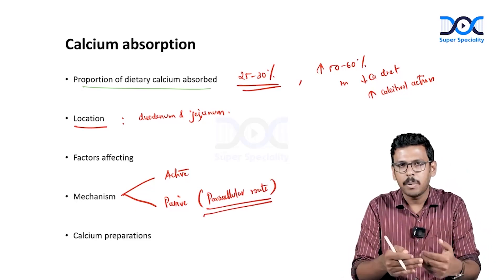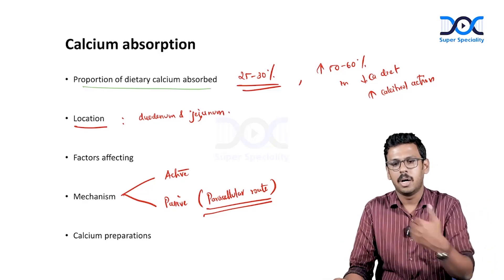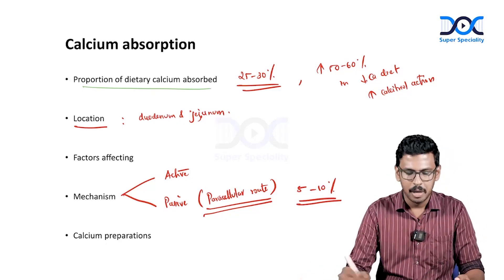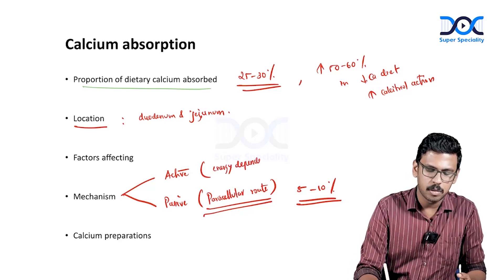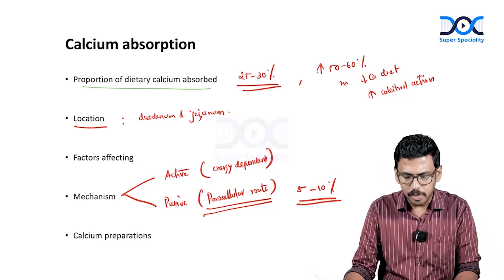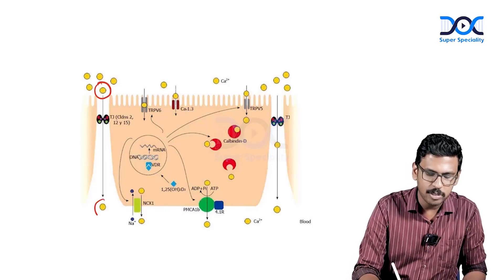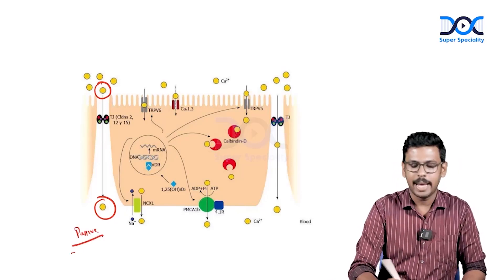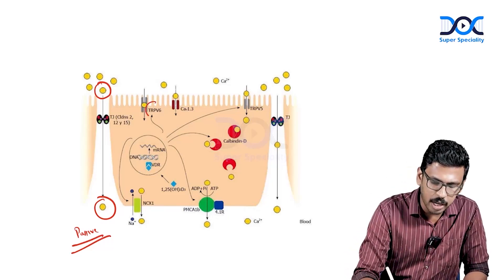Passive transport accounts for 5–10% of calcium absorption. Active transport is energy-dependent and regulated by specific transporters. For active transport, there is a specific transporter on the apical surface of the enterocyte called TRPV6. TRPV5 is located in the renal tubules, specifically in the distal convoluted tubule, where calcitriol upregulates these channels.